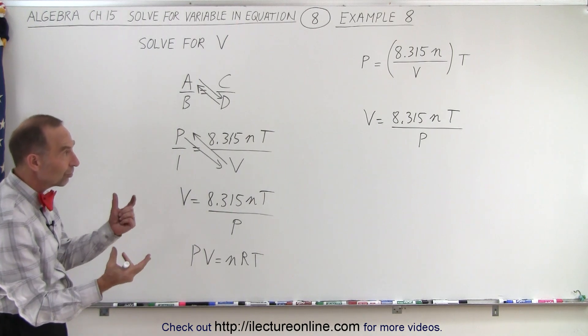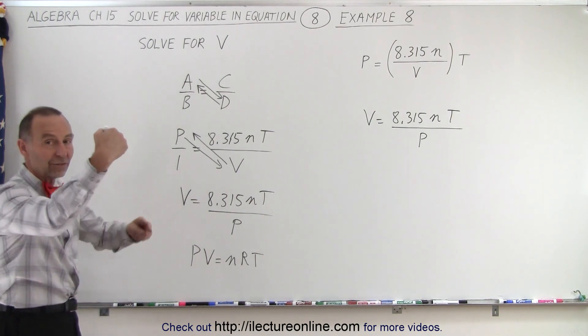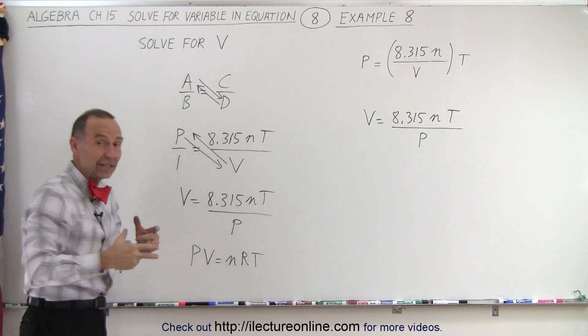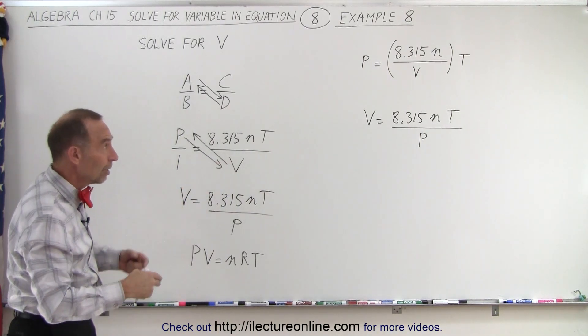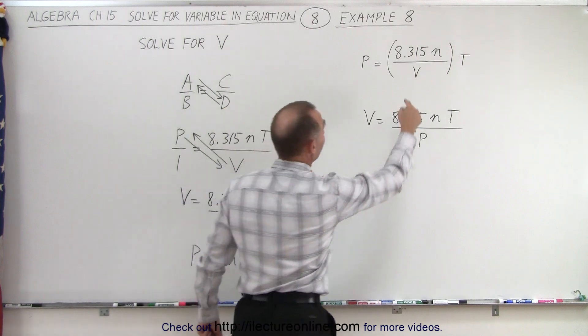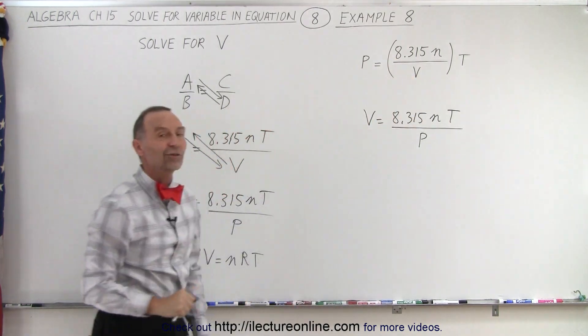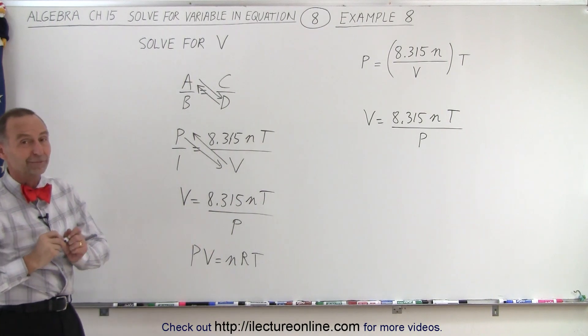Anyway, notice that once you begin to see that you can move things across the diagonal, you don't really have to put in this format. You can if you need some help getting it done. But if you can just see it, you simply say, ah, all I need to do is bring the v there, the p down there, and I'm done. I've solved it for v. And that is how that's done.